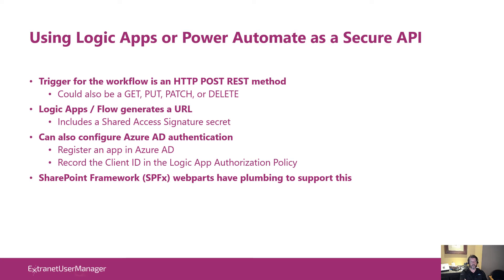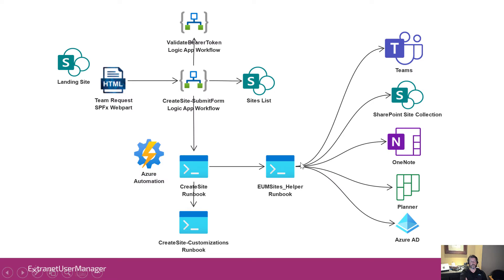What we want to do is configure Azure AD authentication. We're going to register our SharePoint Framework web part as an app in Azure AD — we'll have the client ID in there, and we're going to record it in the Logic App authorization to connect those two together. SharePoint Framework has the plumbing to support this. The overall solution architecture has the SharePoint Framework web part posting into the Logic App workflow, using an underlying SharePoint list to store requests and track processes, a Validate Bearer Token Logic App for the security side, and ultimately calling Azure Automation to run PowerShell to provision things.